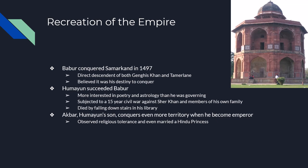Akbar becomes the new emperor and conquers even more territory. He inherited his dad's love of books, but he couldn't read because he had dyslexia — so he just had other people read to him. He was a fan of the European Renaissance and invited Europeans to visit his kingdom, including people from the British East India Trading Company. Akbar marks the beginning of what will become British colonialism in India.